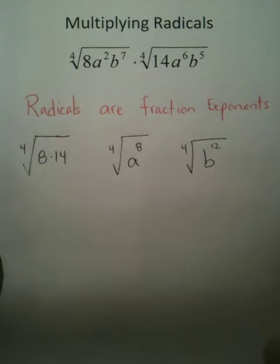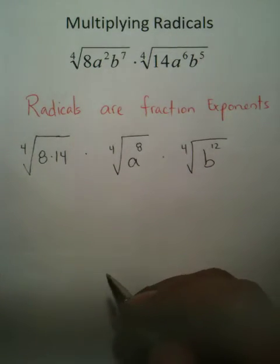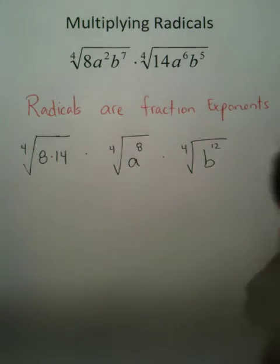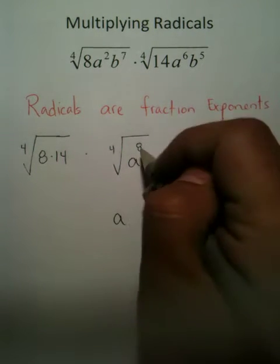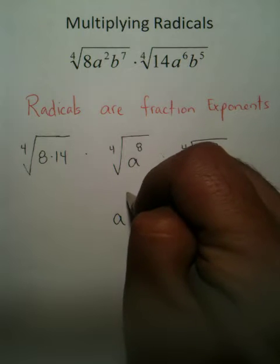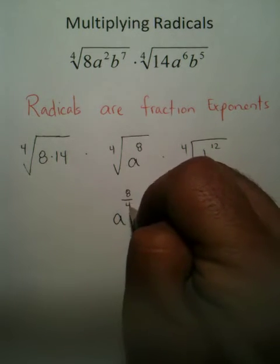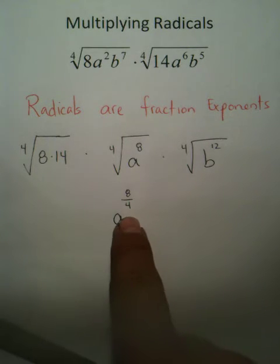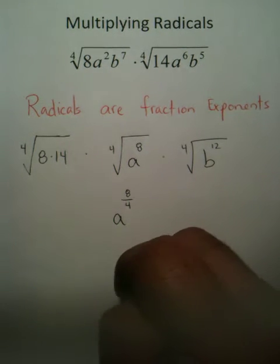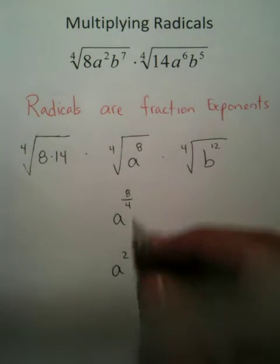And so what you've done is you've really just made your life really easy. Radicals are fraction exponents — what I mean by that is: this power inside the radical and this index outside the radical set up a fraction. 8 divided by 4 is just 2. There you go — now you have A to the 2nd.